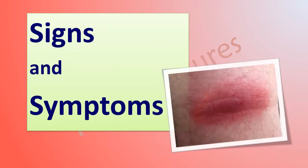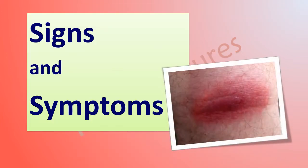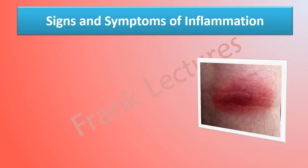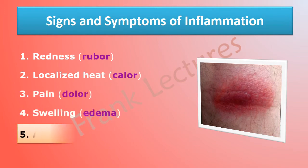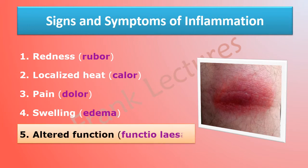Signs and symptoms of inflammation: Inflammation is characterized by redness (rubor), localized heat (calor), pain (dolor), swelling (edema), and altered function or loss of function. Loss of function is an additional sign and its occurrence depends on the site and extent of damage.